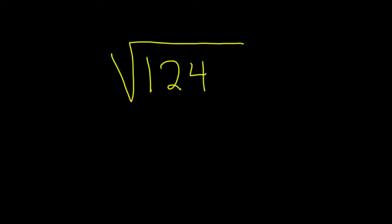Find the square root of 124. In this problem we're going to try to simplify this if possible. So we have to think about what are the factors of 124, and is there a factor that is just a nice perfect square?